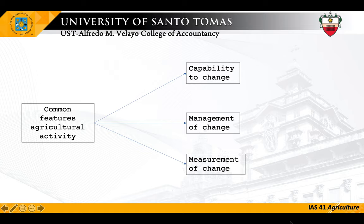Regarding measurement of change: there are two changes in agricultural activity. Number one is change in quality, and number two is change in quantity. For example, change in quantity refers to the number of mango fruits in the mango tree, whereas change in quality — referring to the same example — is the ripeness of the mango fruits. These two changes are to be measured as part of the features of agricultural activity.